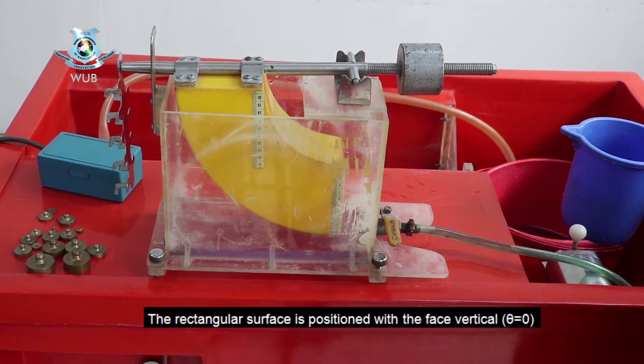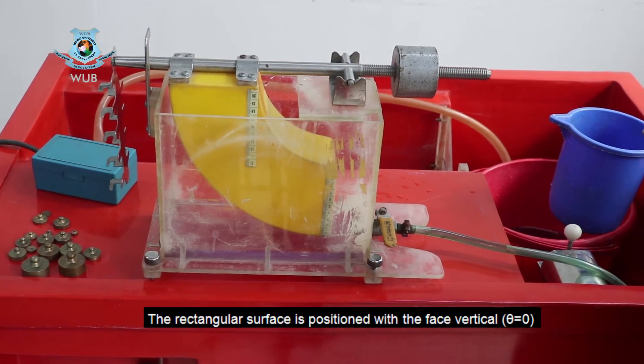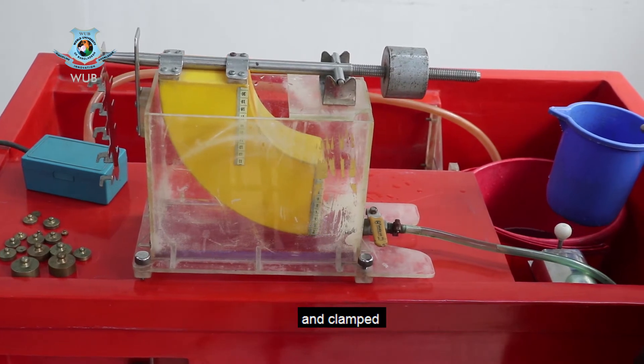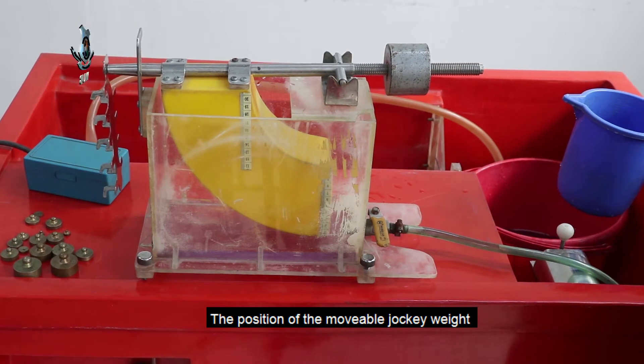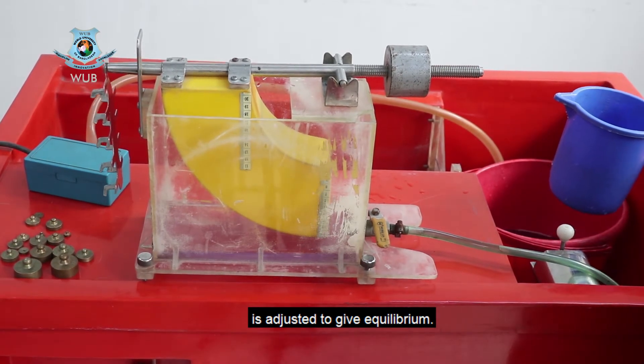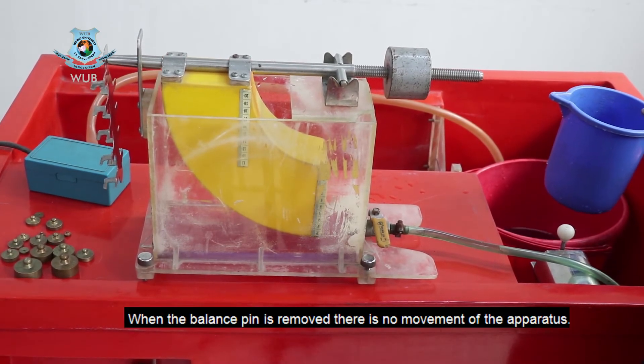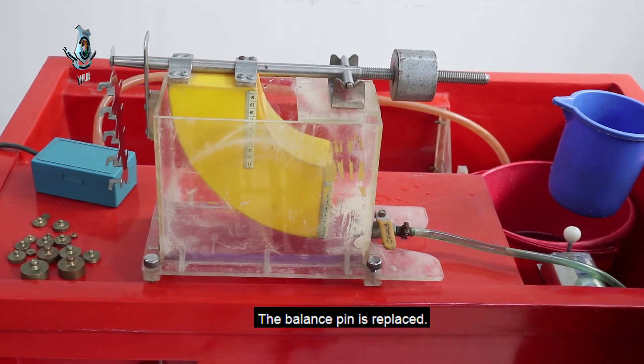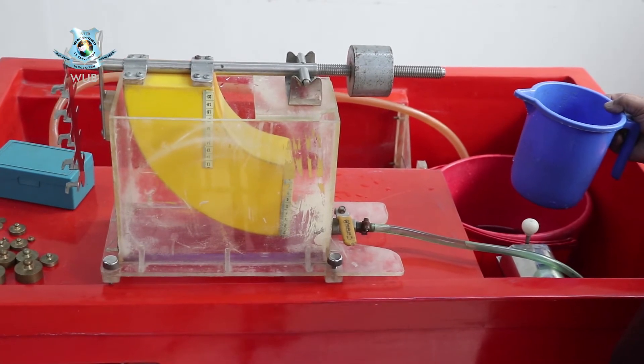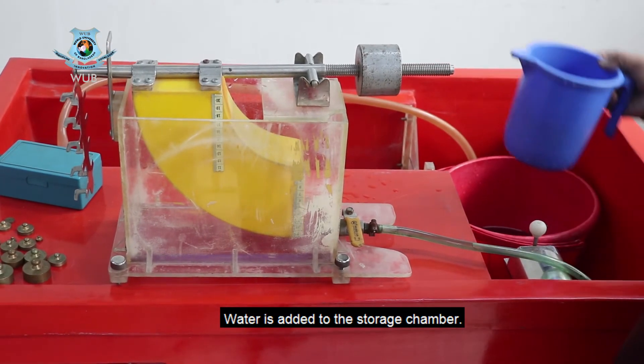The rectangular surface is positioned with the face vertical and clamped. The position of the movable jockey weight is adjusted to the given equilibrium. When the balance plate is removed there is no movement of the apparatus. The balance plate is replaced. Water is added to the storage chamber.